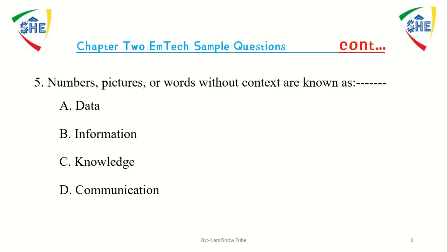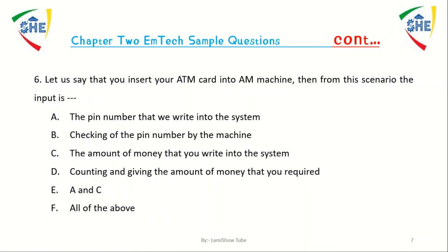Question number 5: Numbers, pictures or words without context are known as dash. A) Data, B) Information, C) Knowledge, D) Communication.